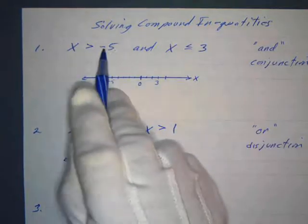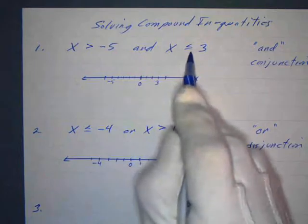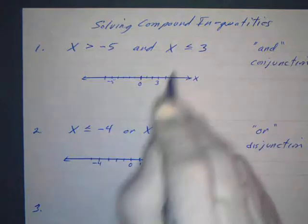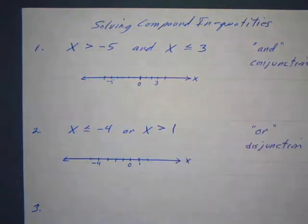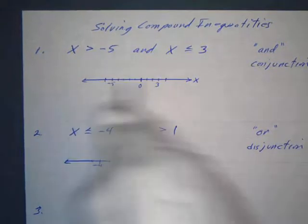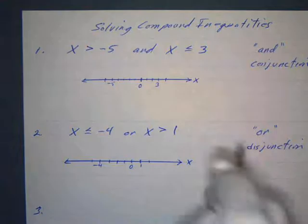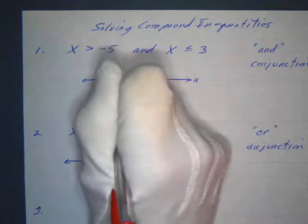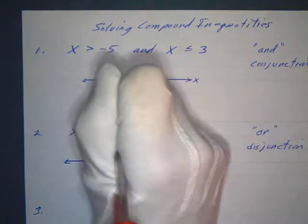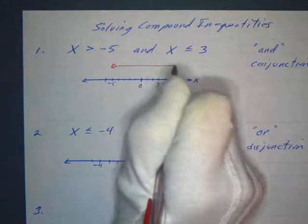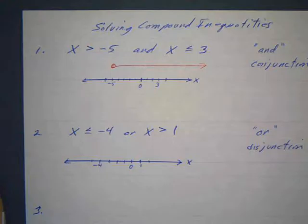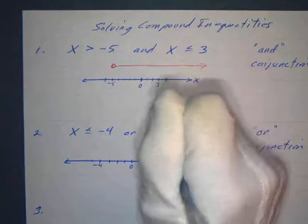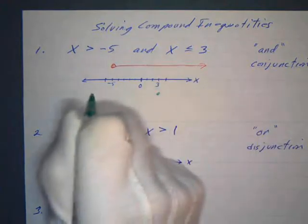Here's an example: x is greater than negative five AND x is less than or equal to three. We have a conjunction, so we draw our number line with negative five and three marked. For x greater than negative five, we place an open circle at negative five and draw an arrow to the right — these are all the numbers greater than negative five but not equal to it.